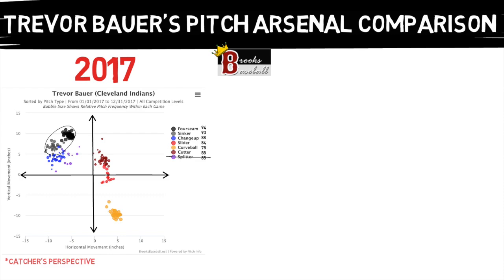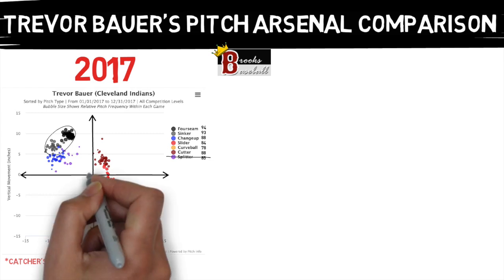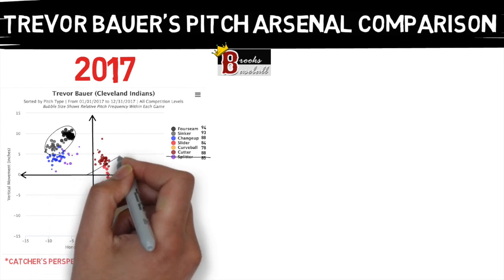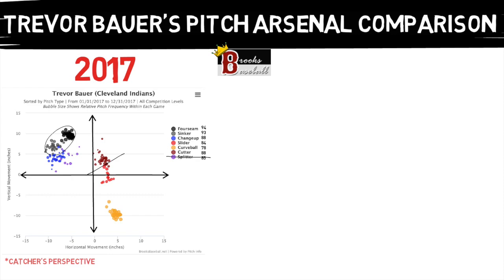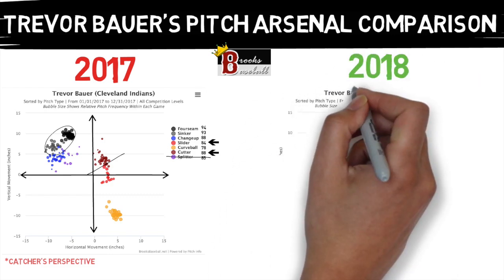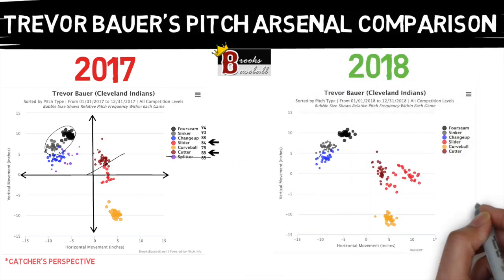There isn't too much to talk about on the changeup — there are some areas where you could see improvement, but it isn't the biggest issue here. That takes us to the slider and the cutter. To me the slider really just seems to be a slow version of his cutter, thrown with similar movement patterns and not much of a speed differential. This is the biggest issue and what needs to be fixed. As I said in the last video, you're looking to create separation between pitches. So let's see what he did to change his arsenal going into 2018.